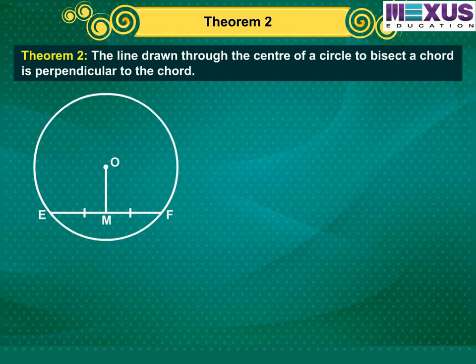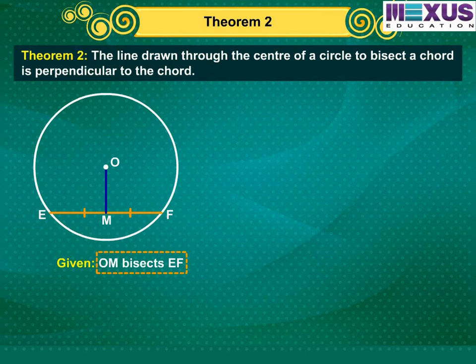Theorem 2: The line drawn through the center of a circle to bisect a chord is perpendicular to the chord. Given, OM bisects EF. To prove, OM perpendicular to EF.